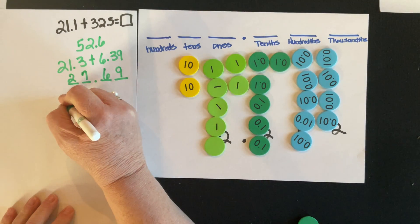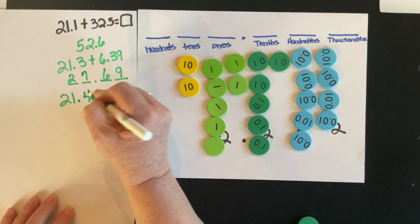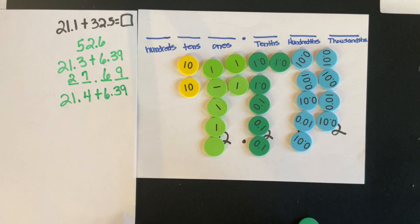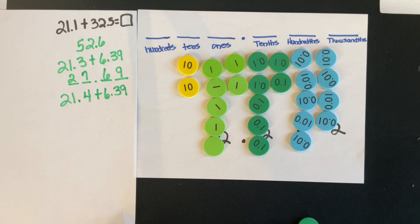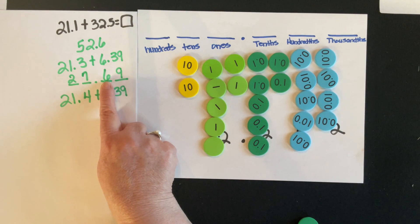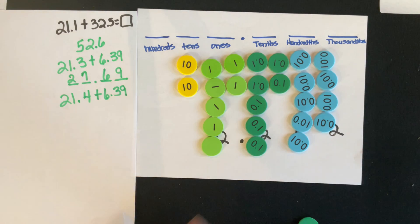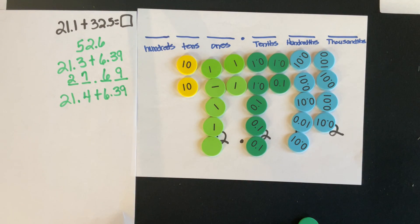What if I change that problem by one more tenth — so adding one more tenth to the first number? Then 21 and three-tenths becomes 21 and four-tenths. The only place value that changed in the sum is the tenths digit, and that six goes to a seven. I still don't have ten of anything in any column, so there's no regrouping needed.